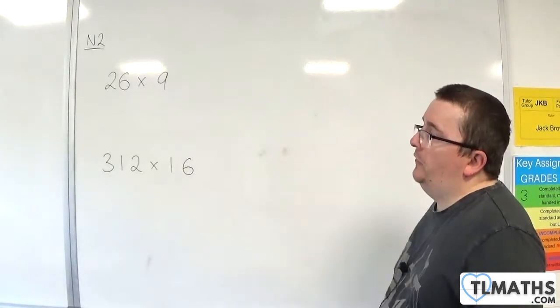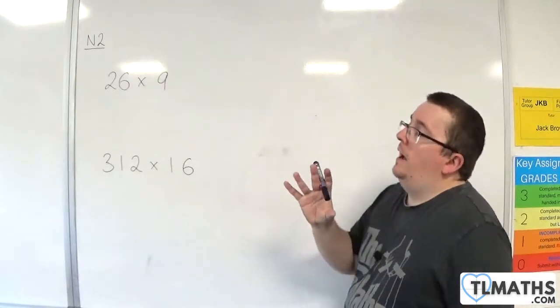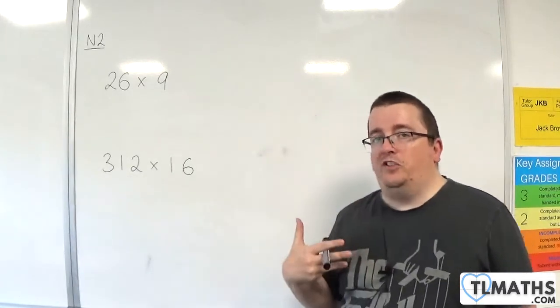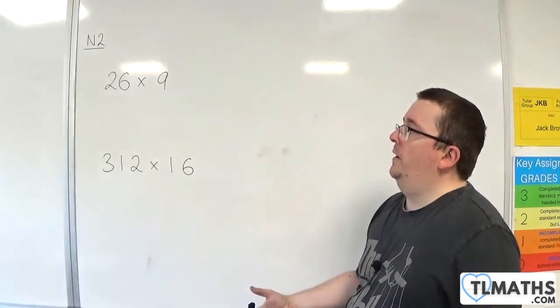So first of all, 26 times 9. Now you could do that via mental arithmetic by doing 26 times 10, so 260, and then subtracting 26 from that, leaving you with 9 lots of 26. So you could do it that way.